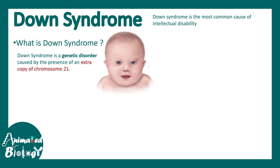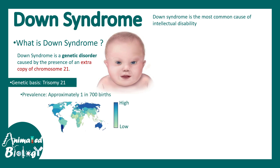Babies which are born with Down syndrome have a specific and characteristic appearance, which we would be talking about in a bit more detail. The prevalence of Down syndrome is quite high — approximately one baby out of every 700 births is diagnosed with Down syndrome, and there are specific hotspots where Down syndrome is more prevalent throughout the world.